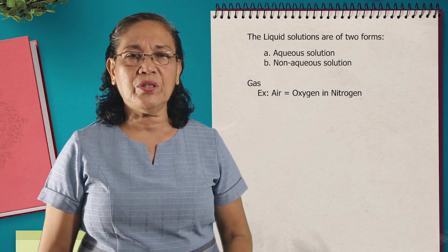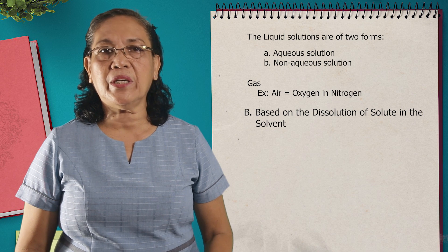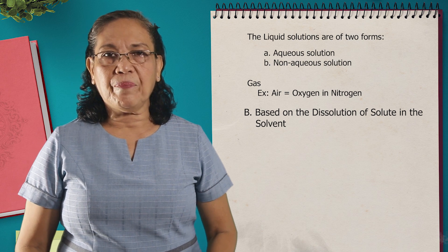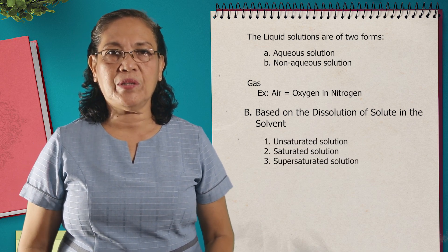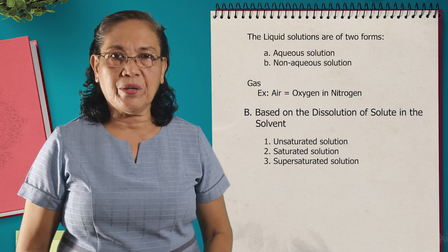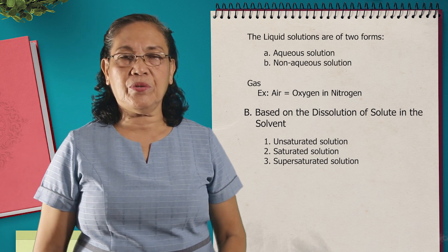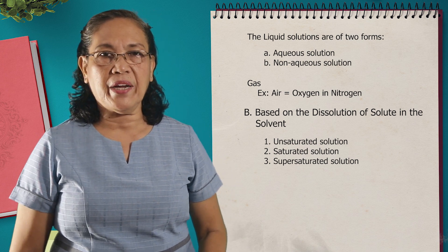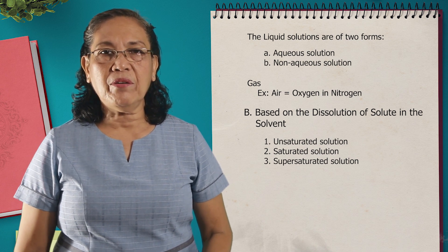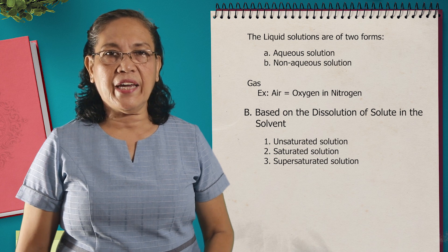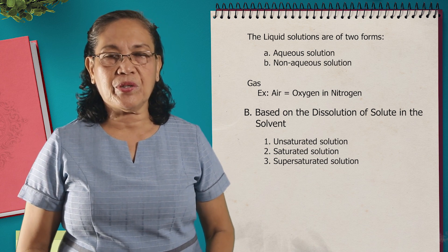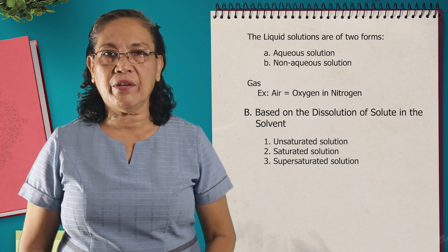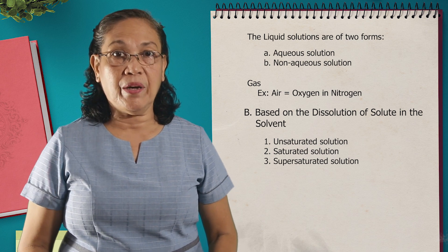Let's go to the classification of solution based on the dissolution of solute in the solvent. We can classify this solution as unsaturated, saturated, and supersaturated solution. When we say an unsaturated solution, this is a kind of solution wherein there is a small amount of solute that the solvent can normally dissolve at a given temperature. That means the solvent can accommodate more of the solute — it still has the capacity to dissolve more.